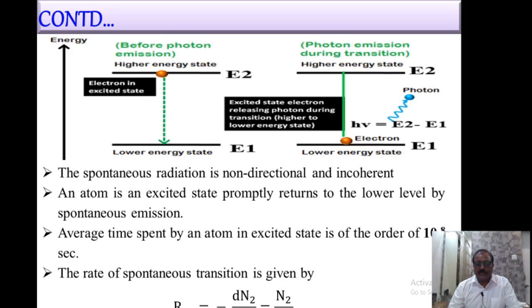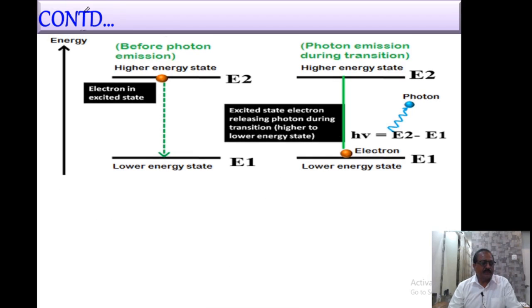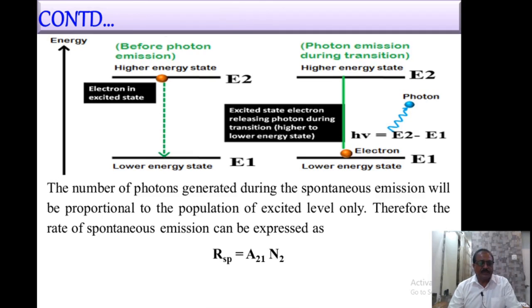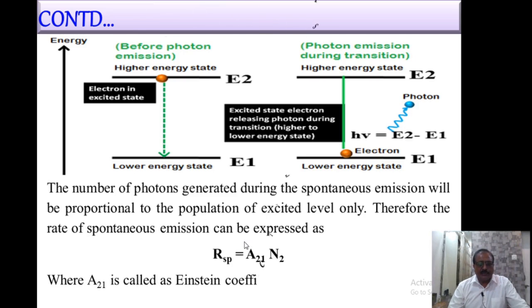The number of photons generated during spontaneous emission is proportional to the population of the excited level only. Therefore, the rate of spontaneous emission can be expressed as Rsp = A21 · N2, where A21 is the proportionality constant known as the Einstein coefficient of spontaneous emission, and N2 is the population of the excited state. This describes the process of photon emission during the transition.